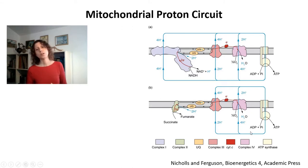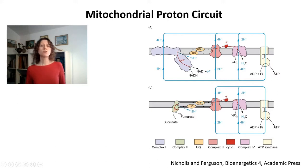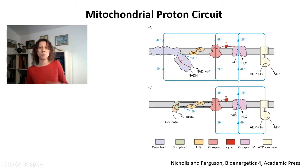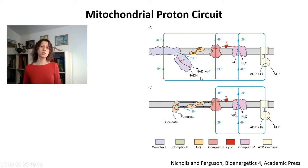I'm just going to remind you that oxidative phosphorylation happens because of the mitochondrial proton circuit. If you have NADH-linked substrates, electrons are going to flow through complex I, ubiquinone, complex III, cytochrome C, and complex IV, and they're going to reduce oxygen to water. This flow is going to be coupled in complexes I, III, and IV to proton pumping from the mitochondrial matrix into the intracrystal space, generating proton motive force. Proton motive force is what allows ATP to be synthesized and released in ATP synthase, coupled to the reentry of protons through the ATP synthase.